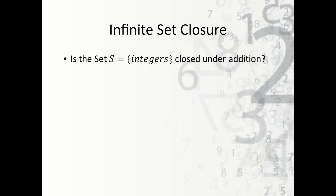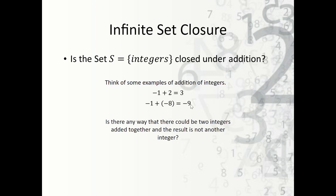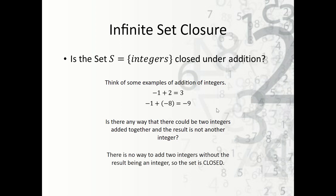Now let's take a look at an infinite set. The set S of integers — is it closed under addition? We can't use a table anymore, so we need to think of examples of addition of integers and ask: is there any way two integers can be added together and not be an integer? If I add any two whole numbers together, I get another whole number. Therefore, there is no way to add two integers together without getting another integer, so the set is closed.